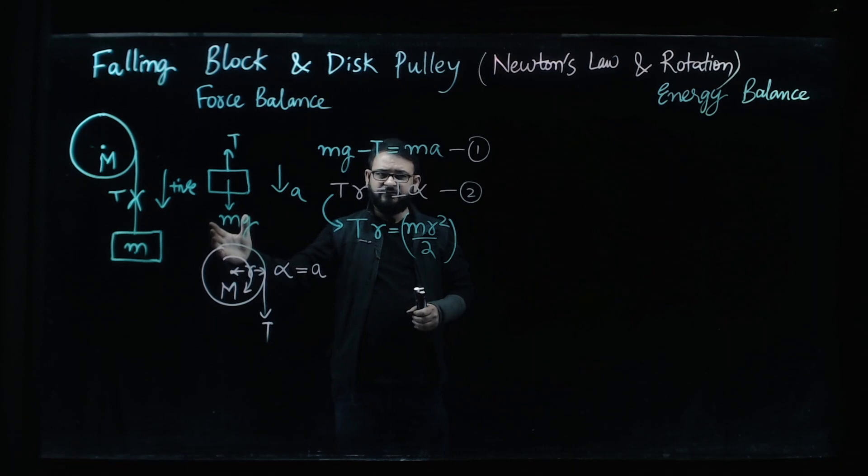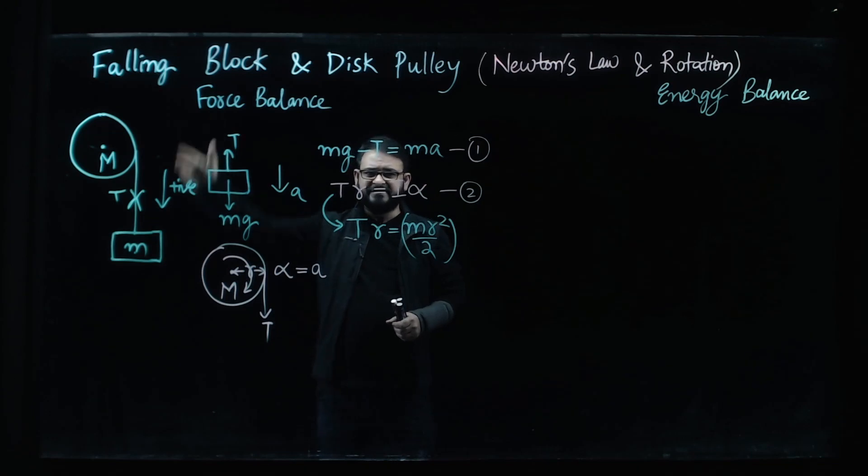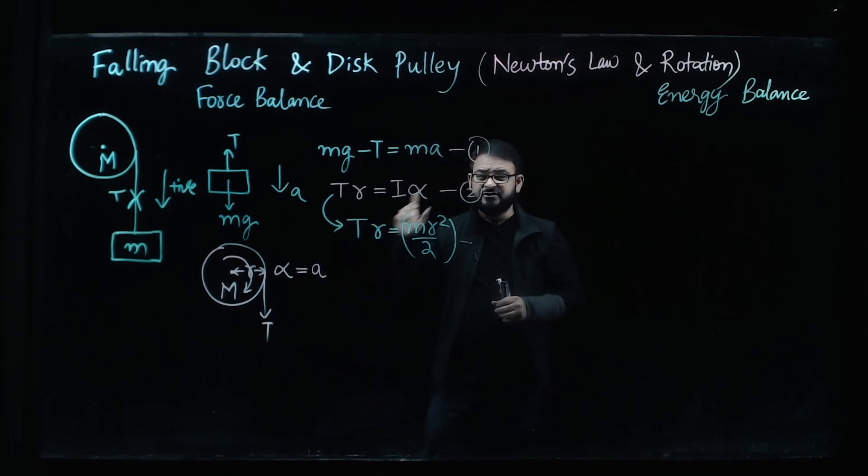The weight is acting downwards, there is a tension upward, and we have taken the direction positive that is towards the ground because all the action is happening towards the ground and the choice of coordinate system is personal.